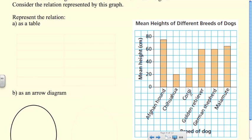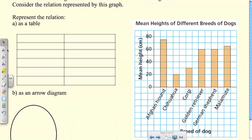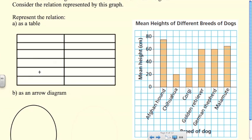They want us to represent this relation as a table. We have six breeds of dog and each breed is only associated with one mean height, which makes things easier. I need to make sure that I have six spaces for my table. We're going to have breeds here.